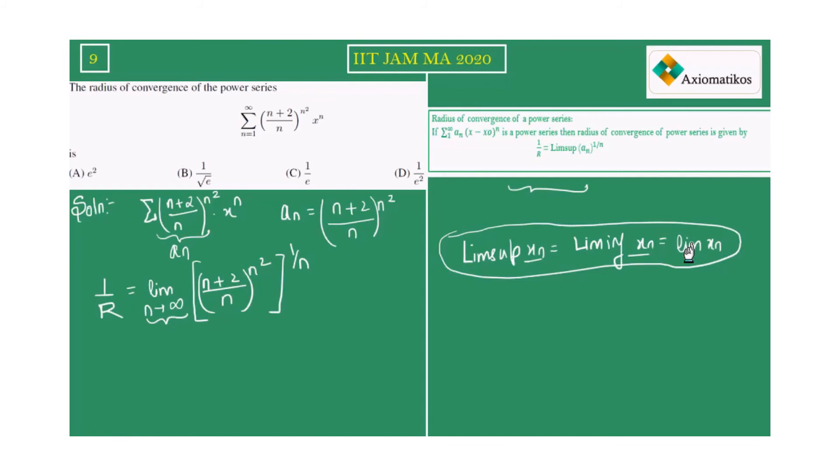Now I know that whatever sequence I am going to write here will converge. Therefore, I am using this limit. Otherwise, I would have written lim sup of x_n. You're getting my point.